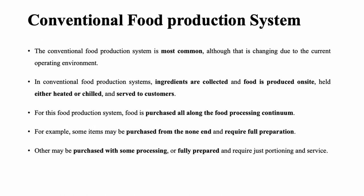Let's talk about the conventional food production system. This system is the most common food production system, although it is changing due to the current operating environment. In this system, ingredients are collected and food is produced on site, which is held either heated or chilled and served to the customers.